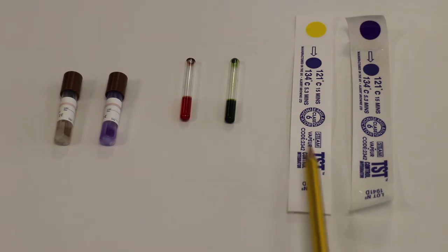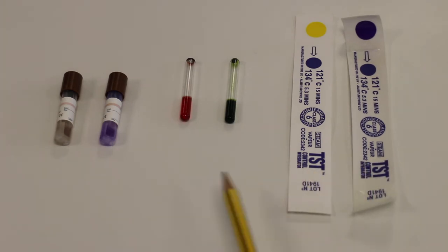Okay, so here we have the two chemical indicators, the browns tubes and the paper strips.